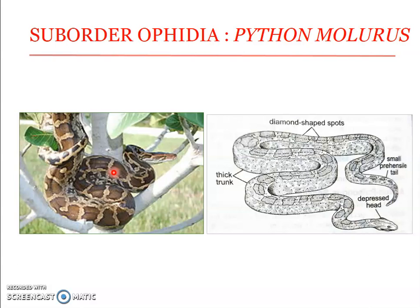Pythons and boas have a vestigial pelvic girdle which articulates with a small femur bearing a claw; the claws are seen on either side of the cloaca and play a part in copulation. They are oviparous. Python molurus, the Indian python, grows to more than eight meters long; it is grayish brown with red and black spots and a spearhead mark between the eyes. The head is slightly depressed, the ventral side is yellowish, lip scales have pits, and it is nocturnal, often waiting on trees for prey.